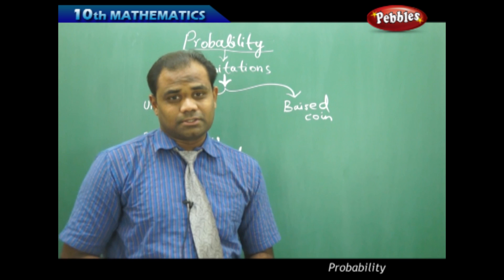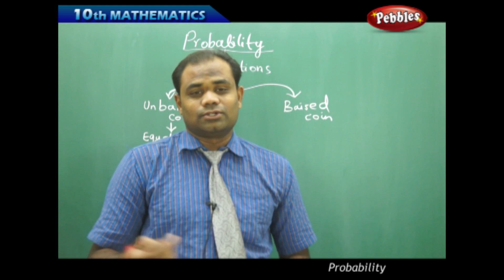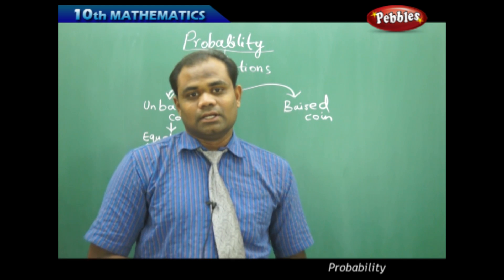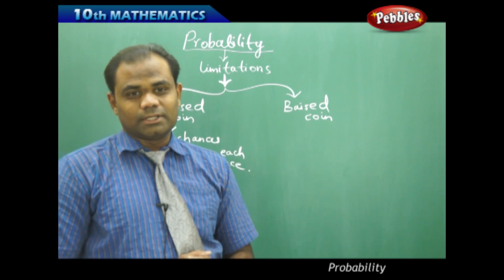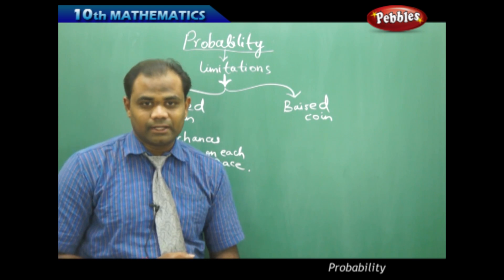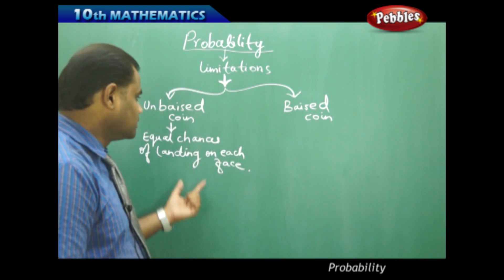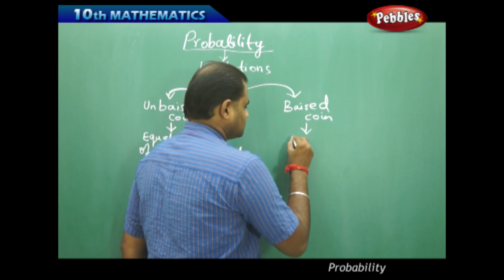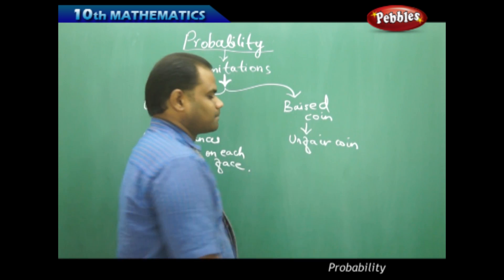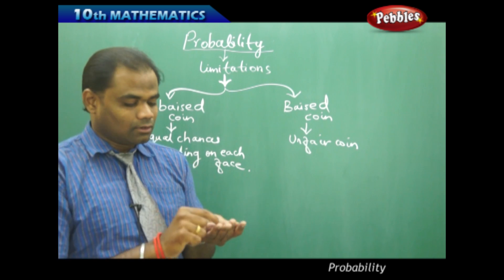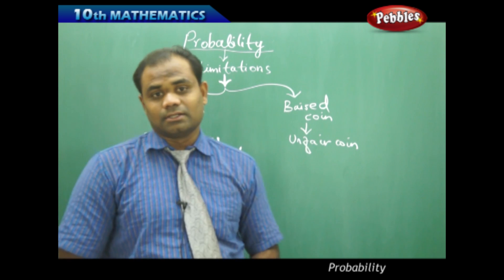Mathematicians and critics always say that some coins are unfair when used in tossing or when expecting probability. Those unfair chances are called biased coins. A biased coin has unequal chances of landing — one side might be bulged or raised while the other side is flat, making it an unfair coin.